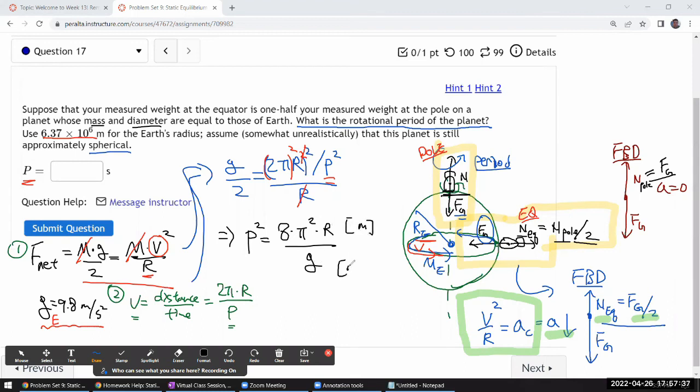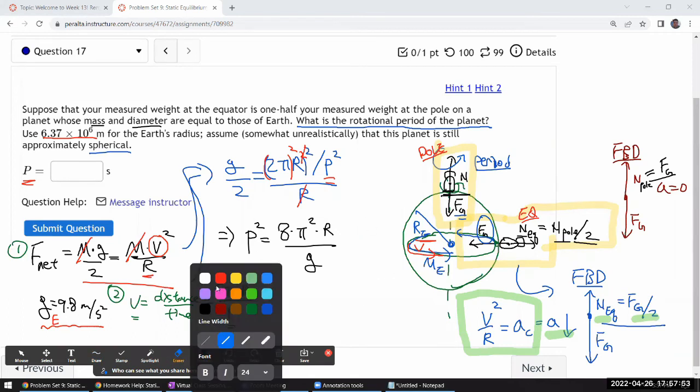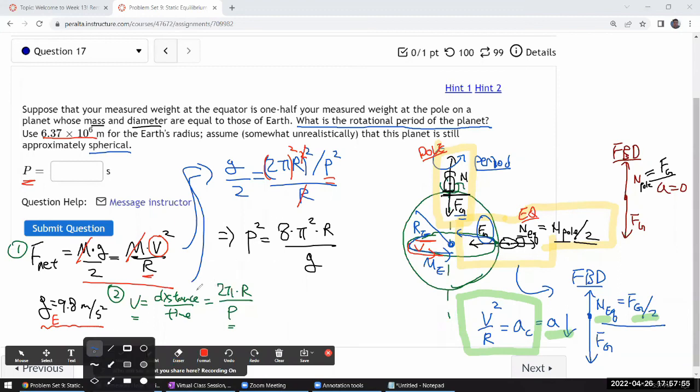To make sure I didn't make any algebra mistakes, let me just check the unit. I have a meter on the numerator, meter per second squared on the denominator from g. Meters cancel, so second squared on my numerator, which matches with the period squared. Yeah, I think that's almost it. I just need to take the square root to get rid of that square.